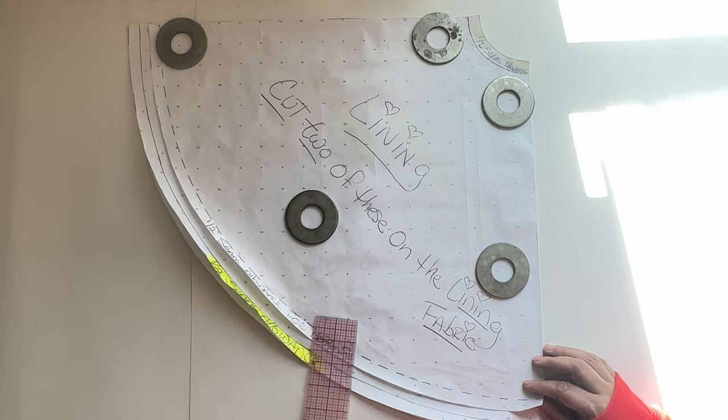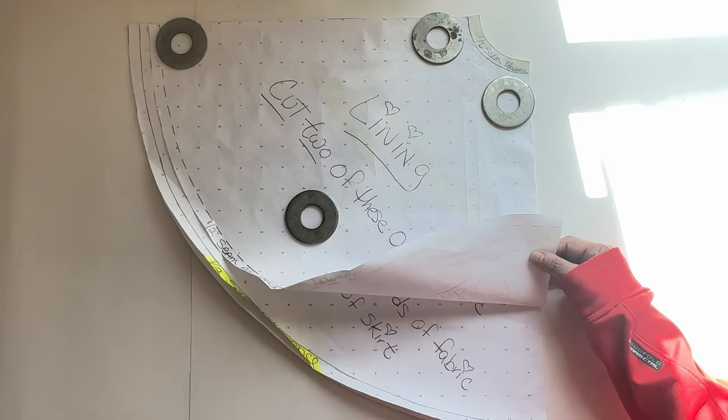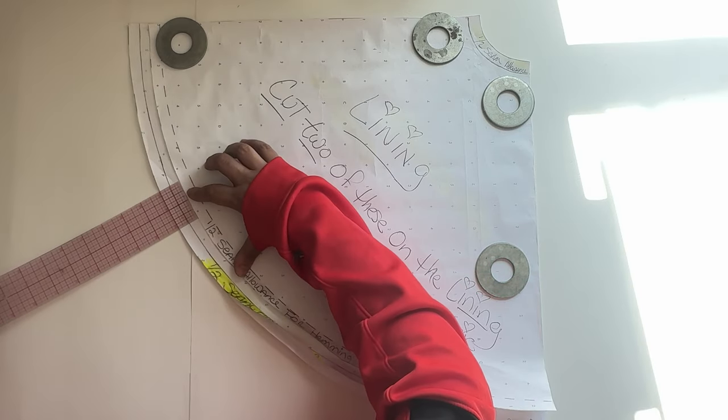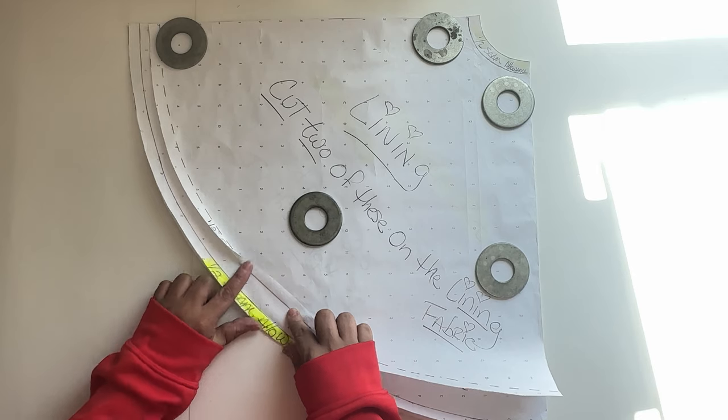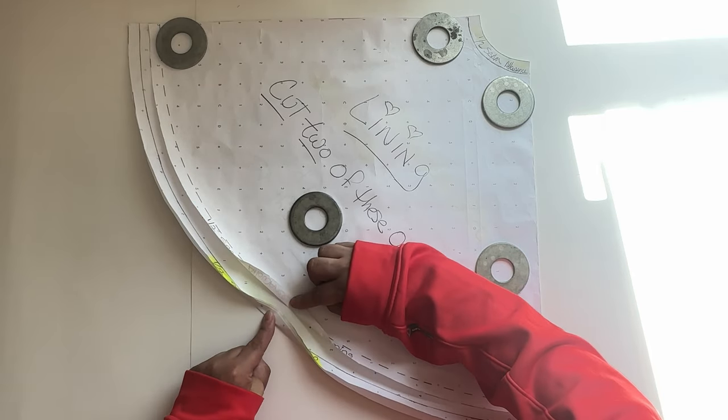Next is the lining. For the lining you're going to trace the skirt pattern on a new sheet of paper. The only difference is you're taking off one inch on the bottom of the lining so the lining doesn't show—it has to be hidden.